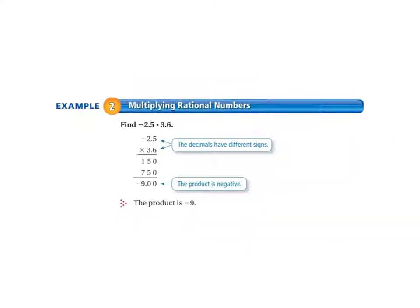Moving on to example number 2, we're going to multiply rational numbers. Negative 2.5 times 3.6. The decimals have different signs, so we multiply as we would normally. We have 150 plus 750 equals 900. And we put in our decimal points. It comes out to negative 9. So the product is negative because we have a negative times a positive. The product is negative 9.